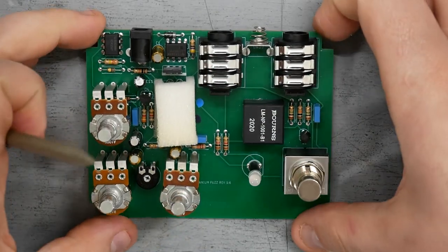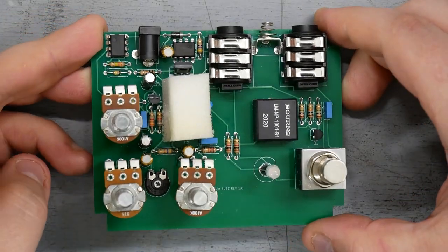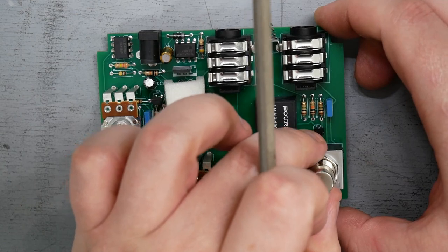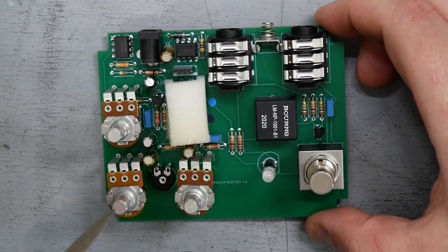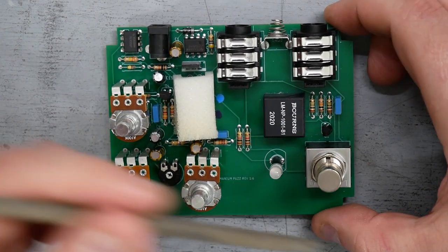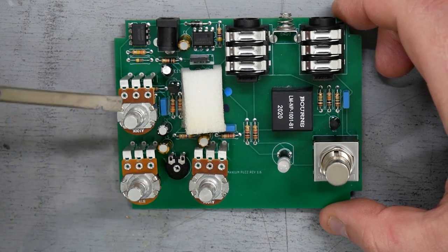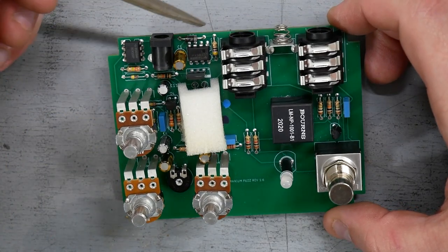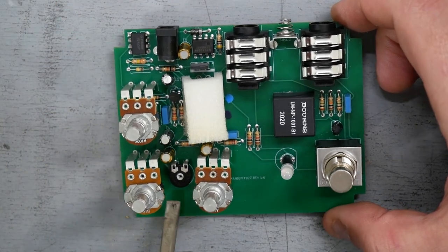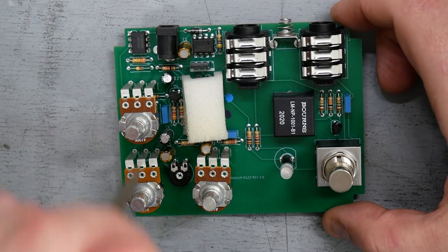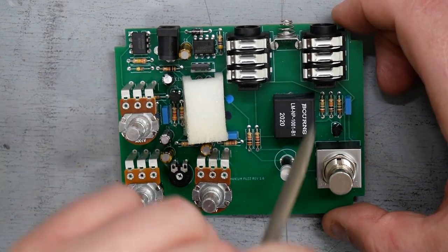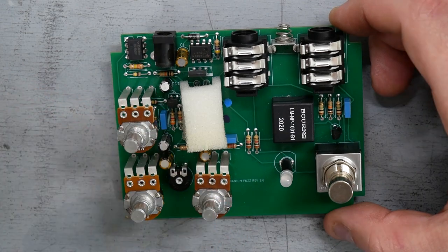Here's our board for the Benson germanium fuzz. Standard three pole double throw footswitch and our PCB mounted potentiometers, DC jack, got a couple ICs here, a little trim pot hiding down in there, and then a standard array of carbon film resistors and film caps. And we got a couple, one, two little silicon transistors also in there. Three transistors right there.